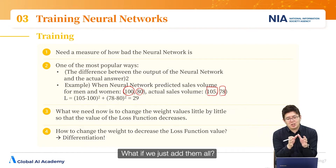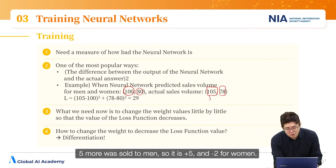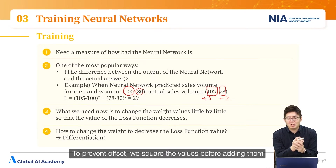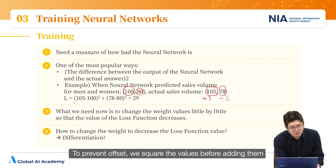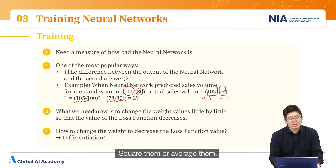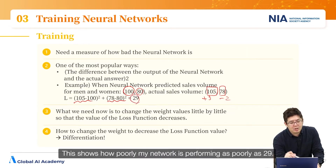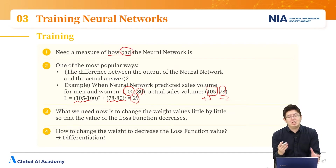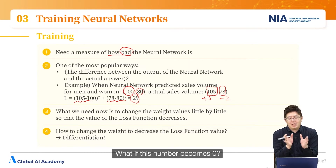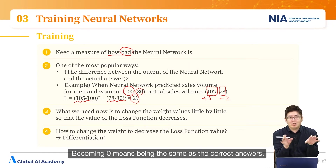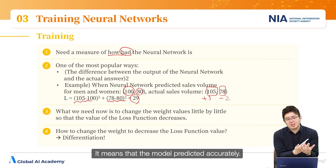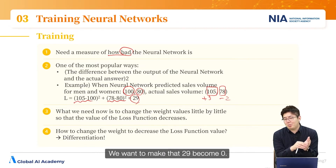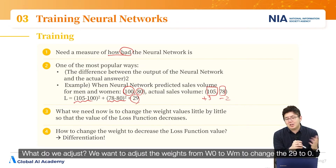What if we just add them all? Five more was sold to men, so it's plus 5, and minus 2 for women — that comes out to 3, which is a reduced value. To prevent offset, we square the values before adding them. Then we have 25 + 4 = 29. This number shows how poorly the network is performing — as poorly as 29. If this number becomes 0, it means the model predicted accurately. We want to make that 29 become 0 by adjusting the weights from w0 to wm.